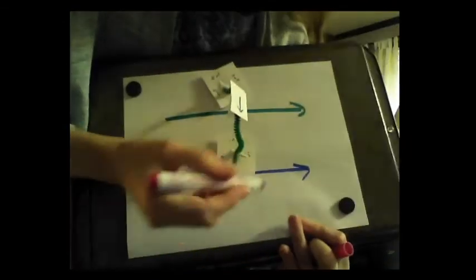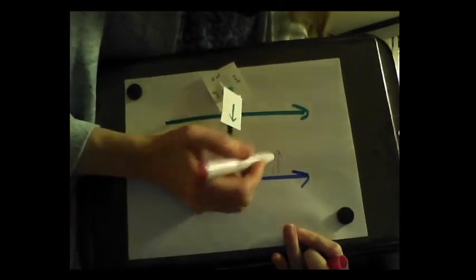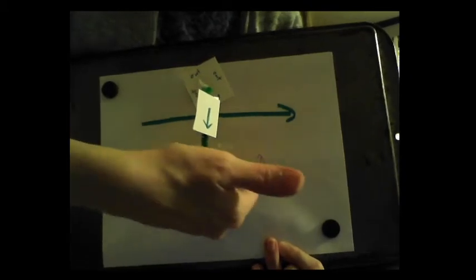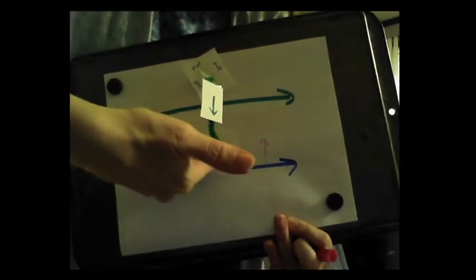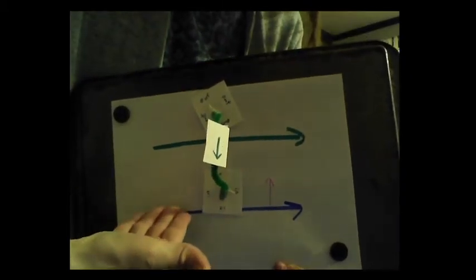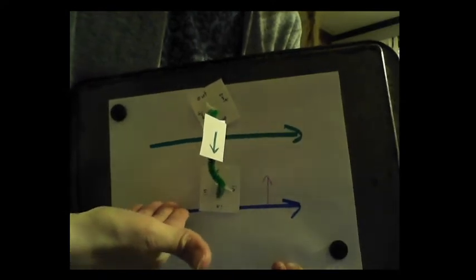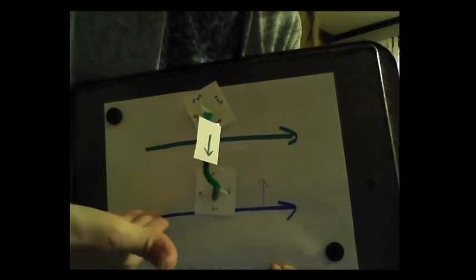So I can add in here that my force would be up because again the current is to the right in the blue wire. The magnetic field due to the other wire is going in. That gives me an upward force.